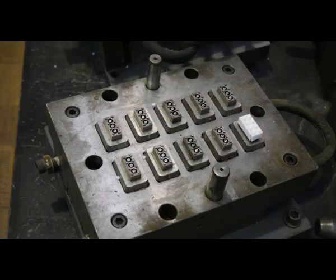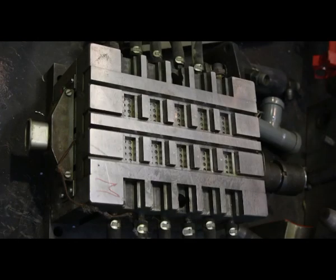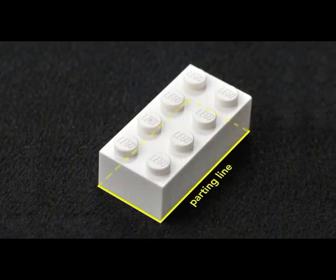The core half and the cavity half of Lego molds are designed so that the parting line is at the bottom edge of the brick. This hides the parting line.